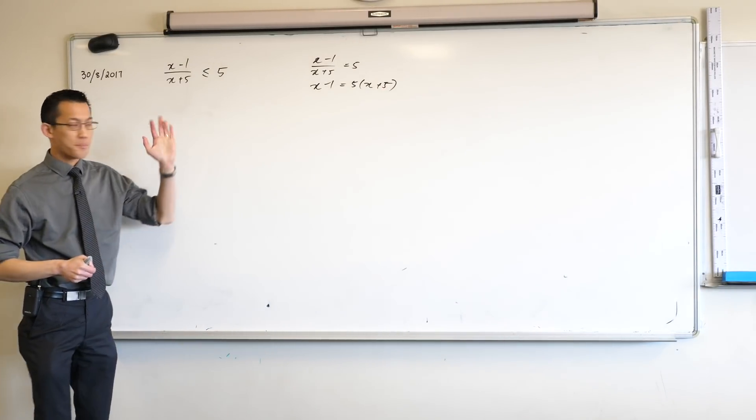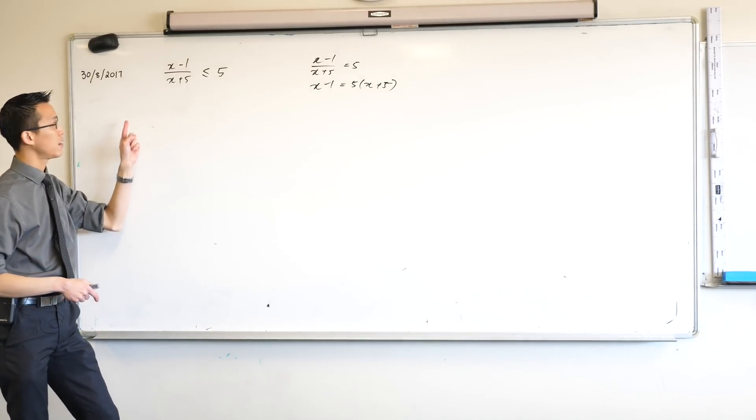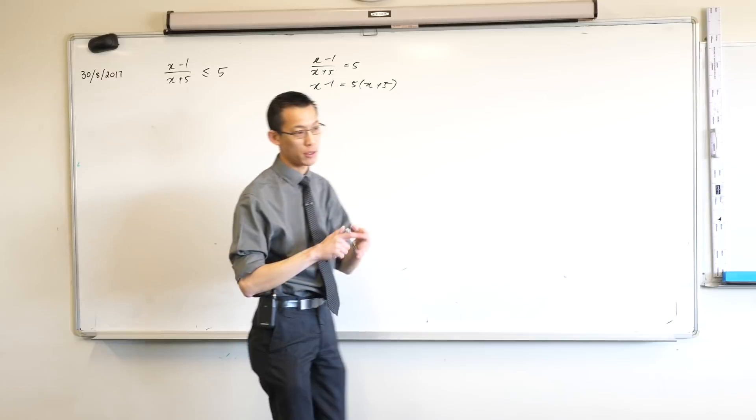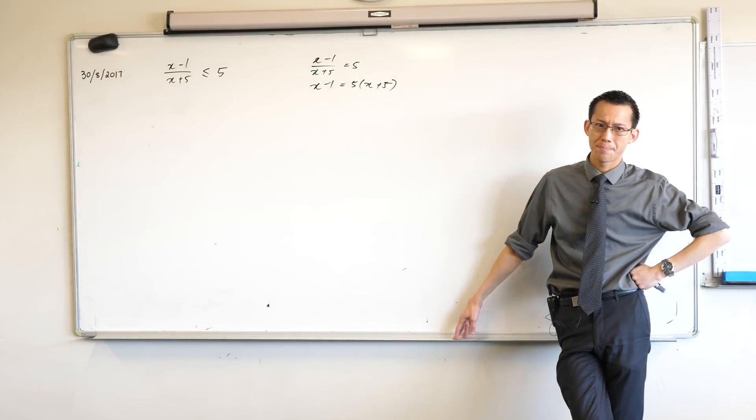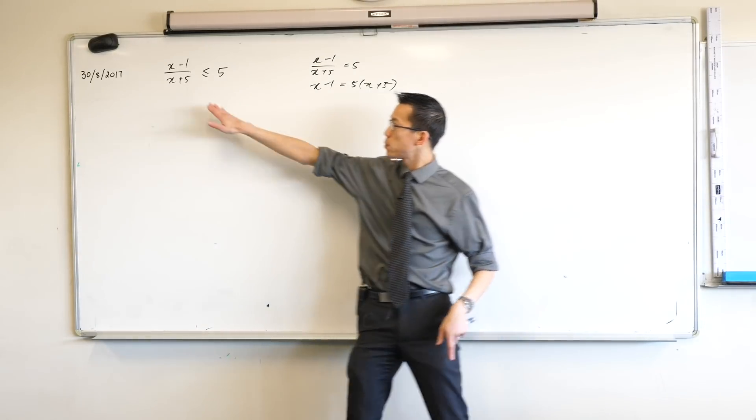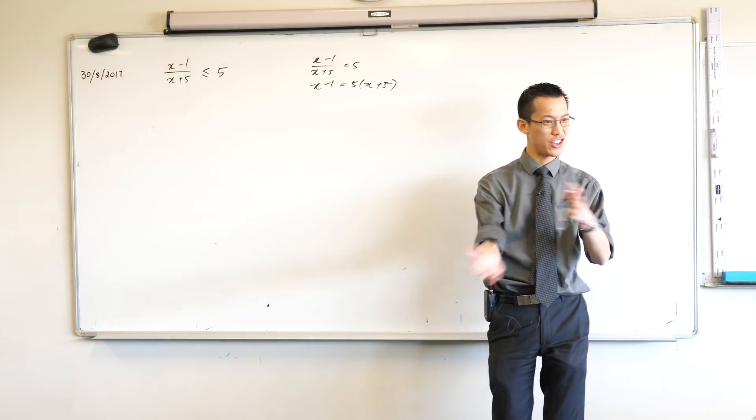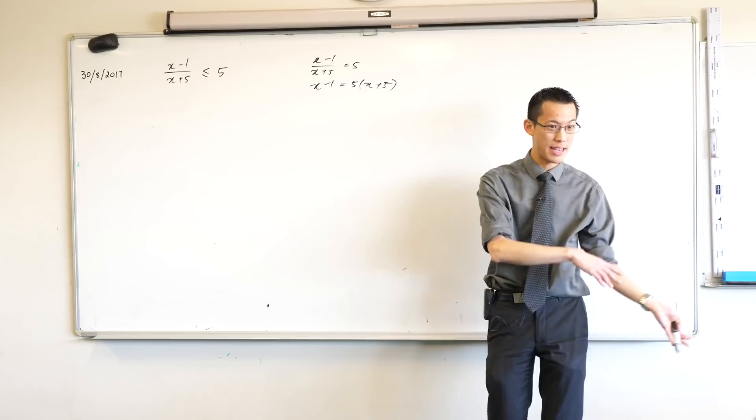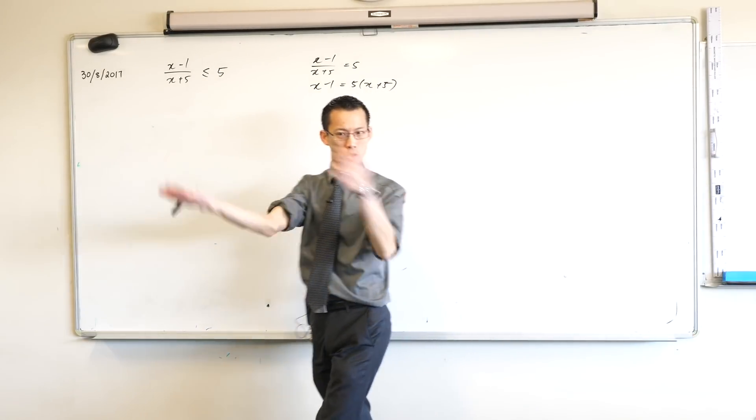However that only works in equation land. You can't do that here for an inequality. You can't just multiply by x plus 5. Does anyone remember the reason why? Correct. x plus 5 is variable because x is variable, so therefore it changes. Sometimes positive, sometimes it's negative, which means you don't know what happens to this inequality. Which direction does it go?